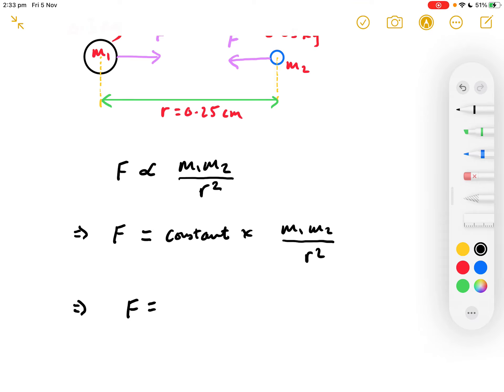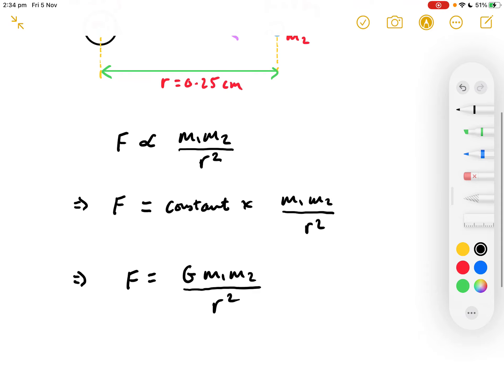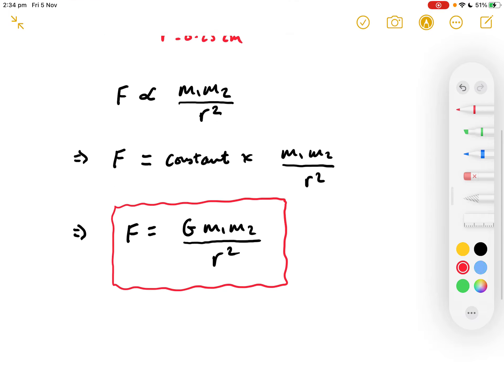And we now know, and have proved experimentally, that this constant is G, the universal gravitational constant. So, we end up with this equation, F equals GM1M2 over R squared.